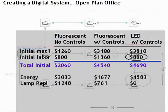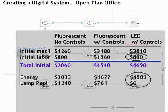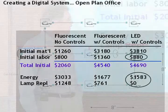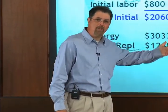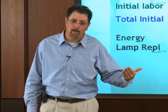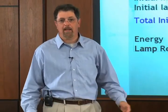If you bring that down to operating costs, you can see that the fluorescent system with no controls is very unfavorable in this comparison, in terms of increased energy cost and cost to replace the lamps. The performance of the fluorescent system with controls is really quite a bit better because the lamp life is going to be extended and energy consumption is reduced. But this comparison really weighs heavily in favor of the LED system with controls because of the additional energy savings and the absence of lamp change-outs and lamp maintenance.